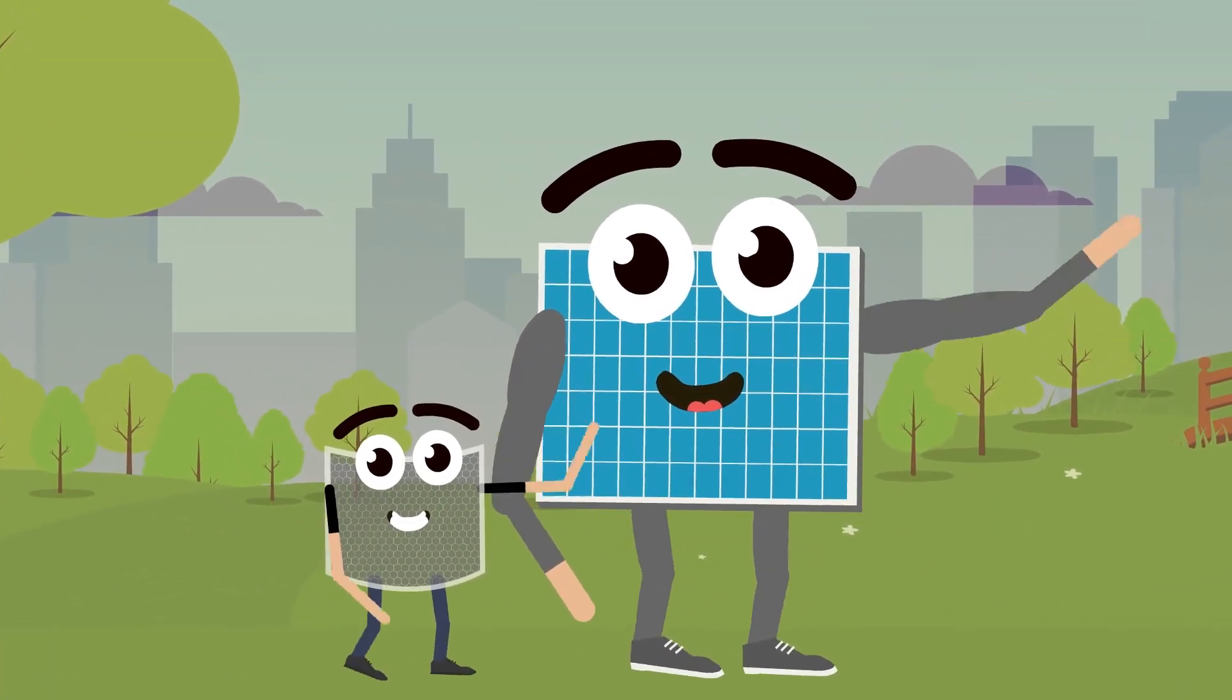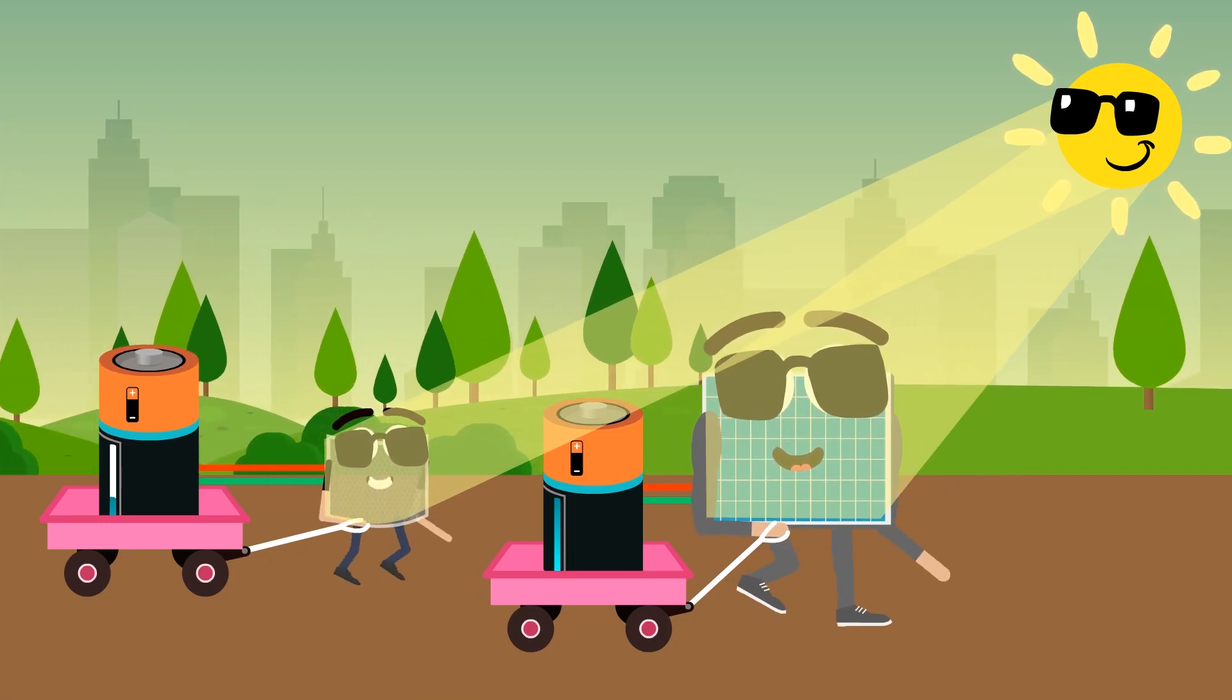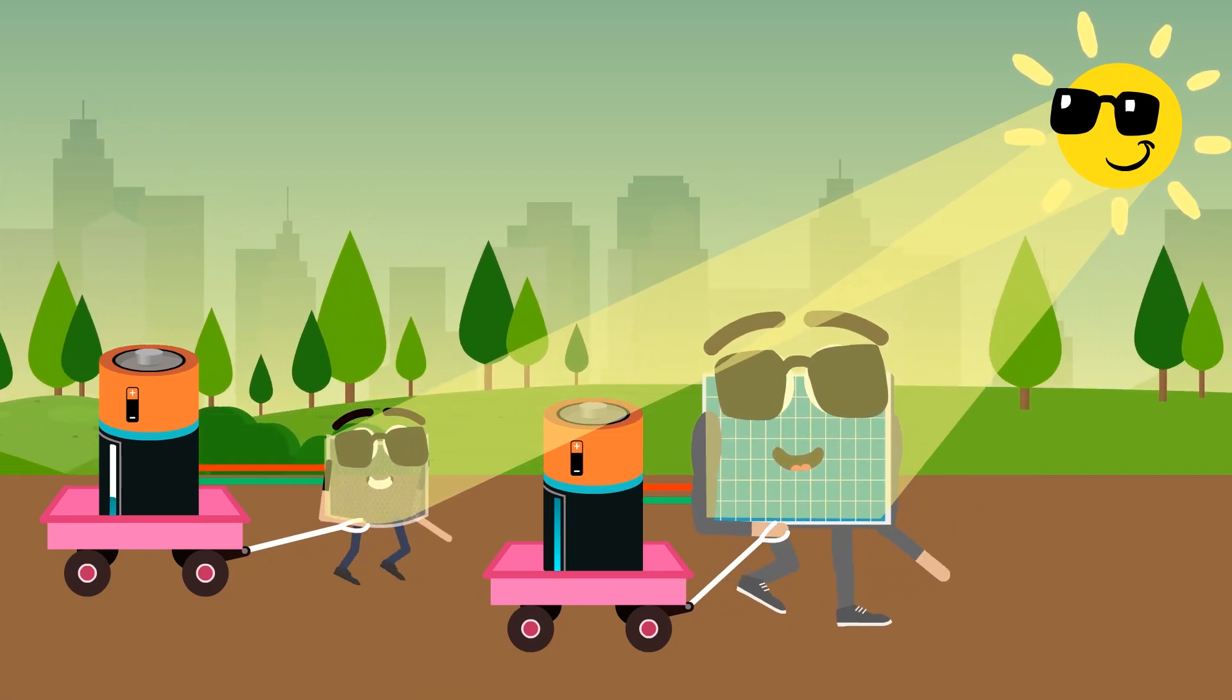Meet Sid and Owen. Sid and Owen are solar cells, and they are both able to make energy from sunlight.